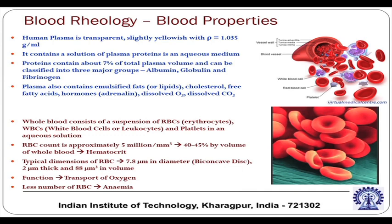Whole blood is plasma plus blood cells. Blood cells include red blood cells (erythrocytes), white blood cells (leukocytes), and platelets in an aqueous solution. The red blood cell count is approximately 5 million per millimeter cube, which is about 40 to 45 percent by volume of the whole blood.